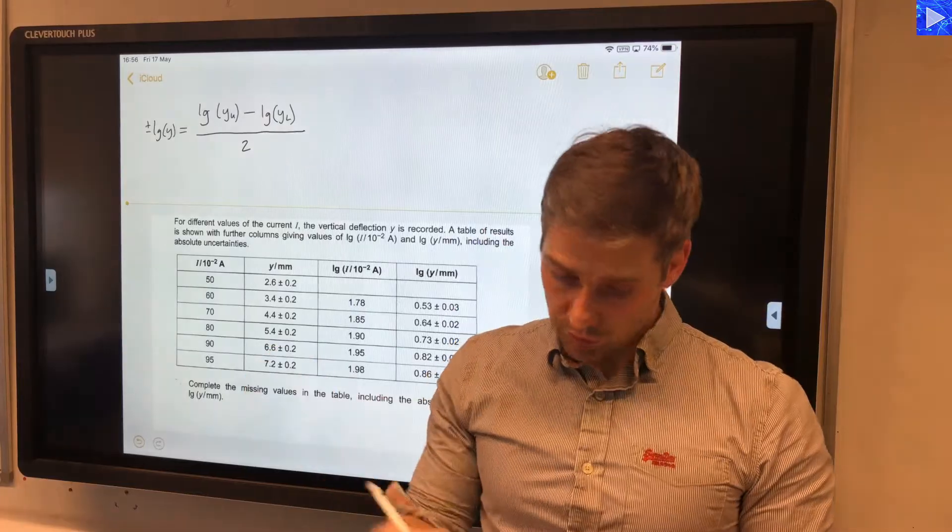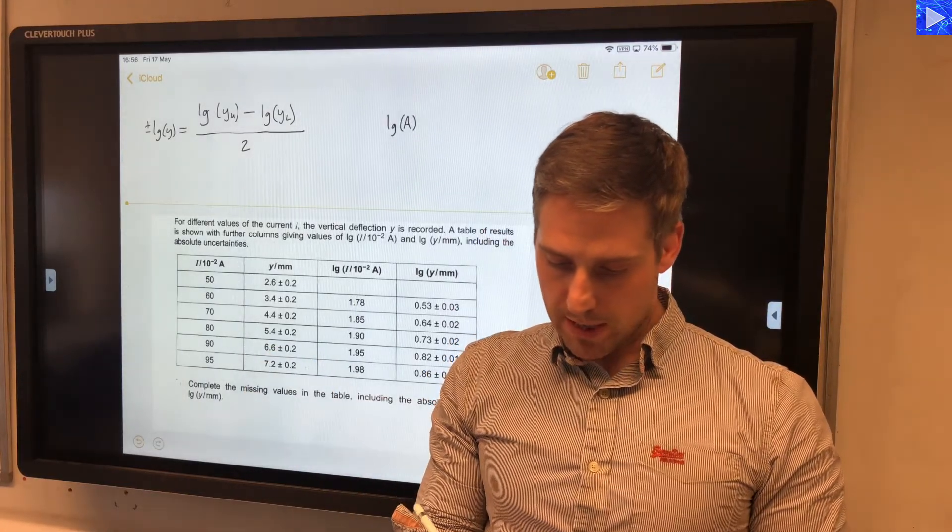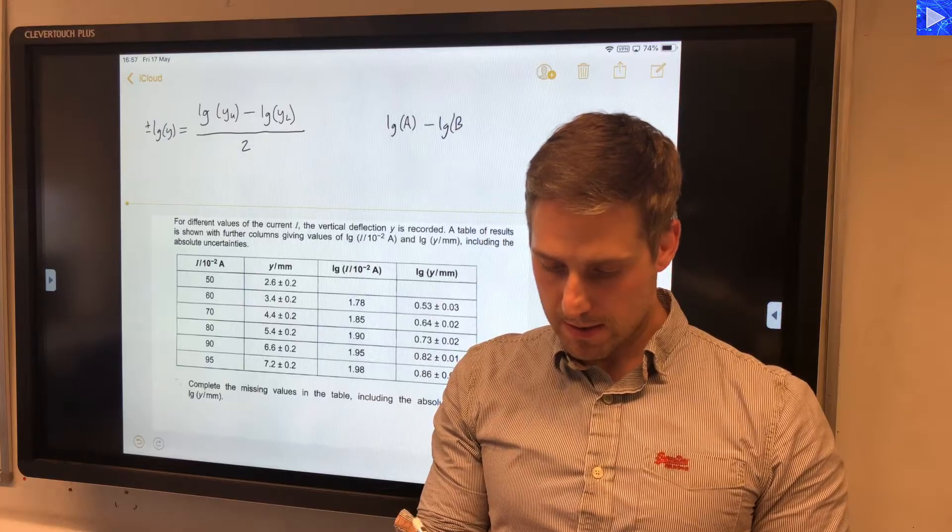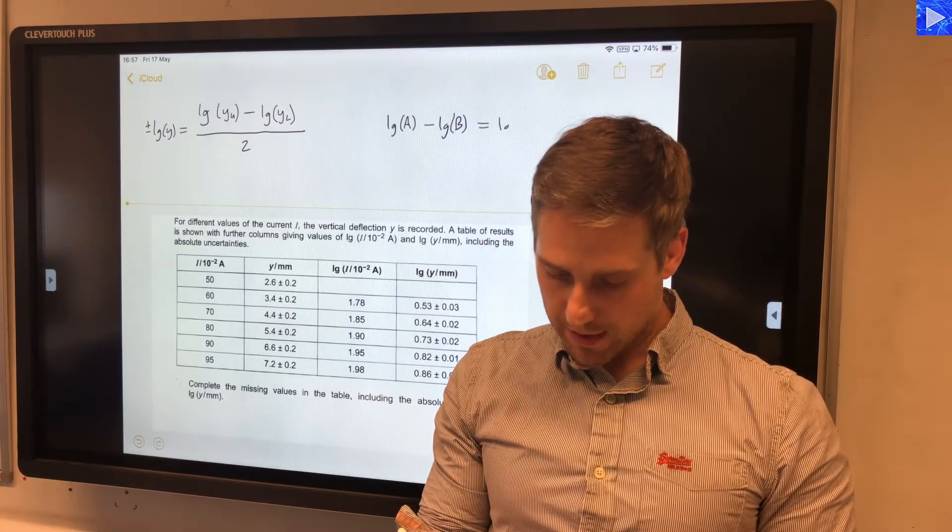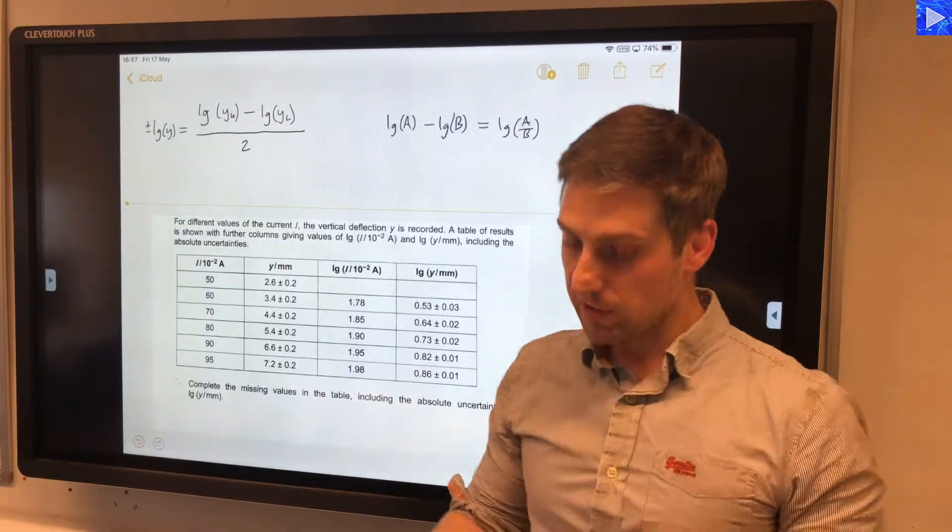Now, if you remember log rules, if we have log a minus log b, then that's the same as log(a over b). So you could do a little bit of a simplification here.